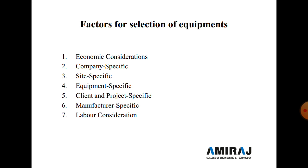The third factor is site-specific conditions. The selected site may be on a hill area, valley area, or plain terrain. Constructing a building on a hill area is very difficult, so selecting equipment for a particular site is challenging. The equipment required varies depending on the specific site characteristics.